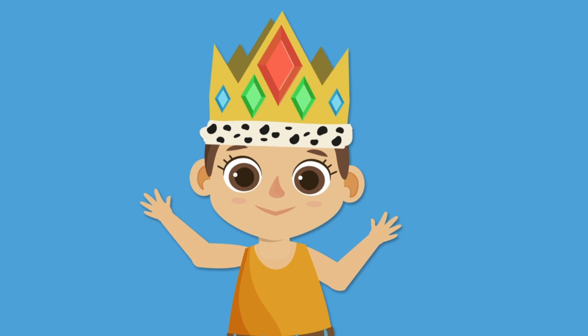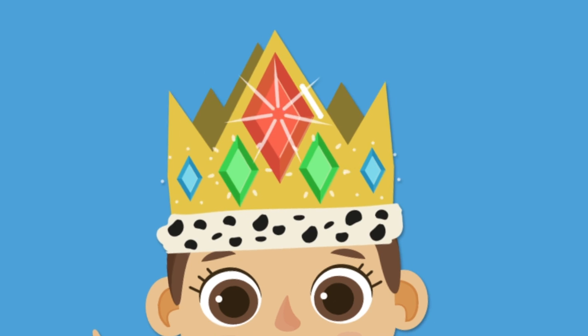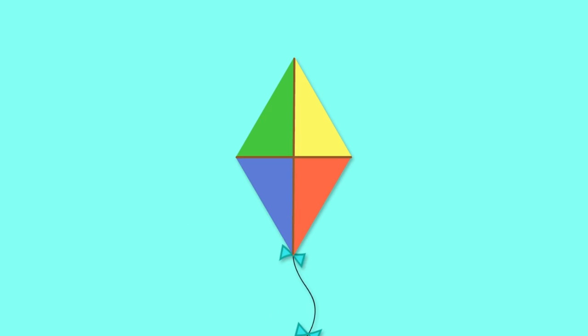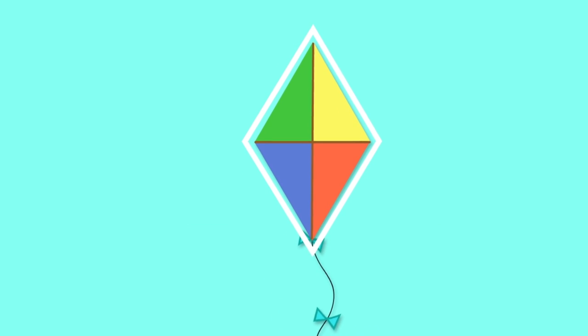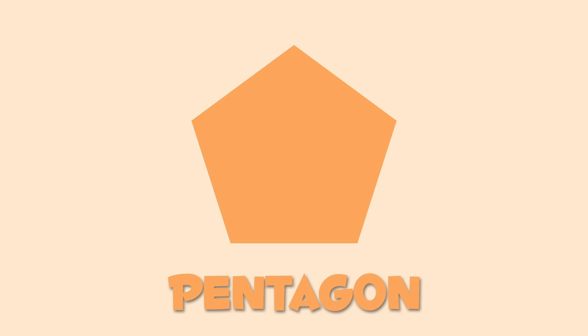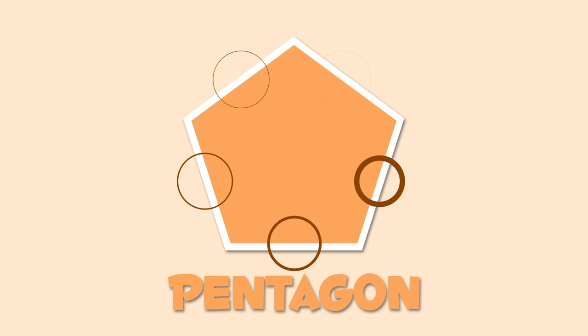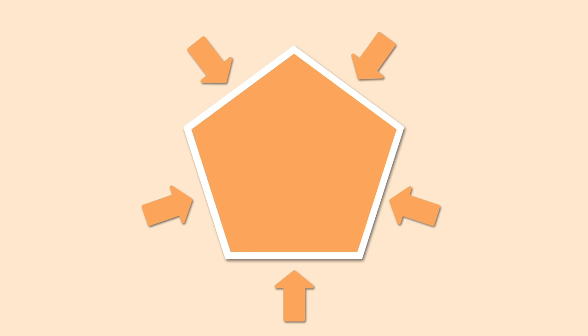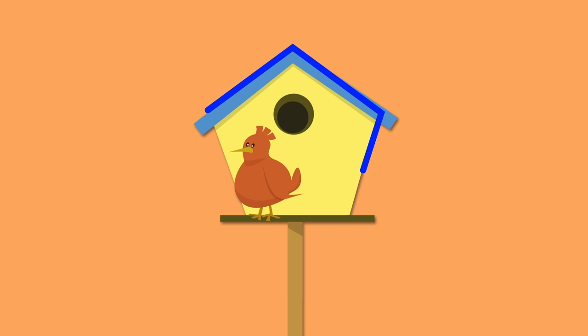A diamond looks like the jewel on this crown or like this kite. This one right here is a pentagon — pentagons have five sides. A pentagon looks like this birdhouse or like these football stitches.